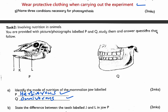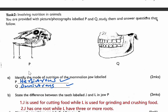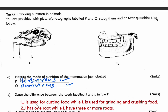Part B asks: state the difference between the teeth labeled J and L in jaw P. J is the incisor and L is the molar. In terms of function: J is used for cutting food, while L is used for grinding and crushing food. In terms of structure: J has one root, while L has three or more roots. Those are the two marks.